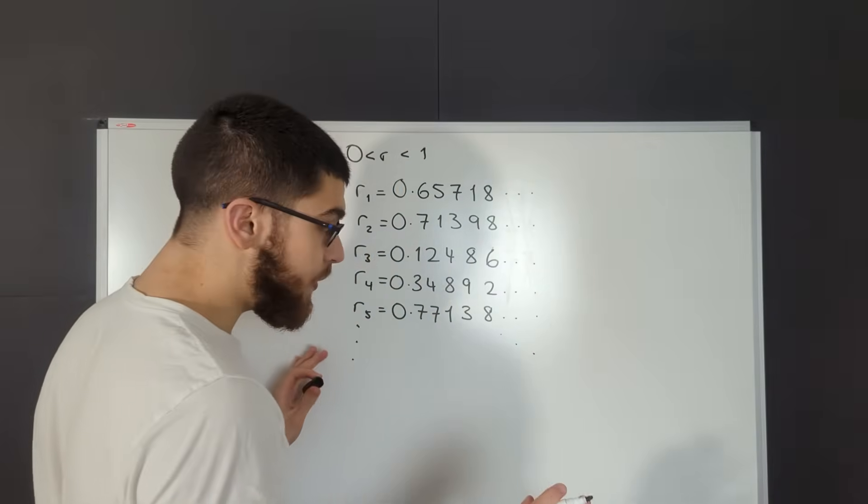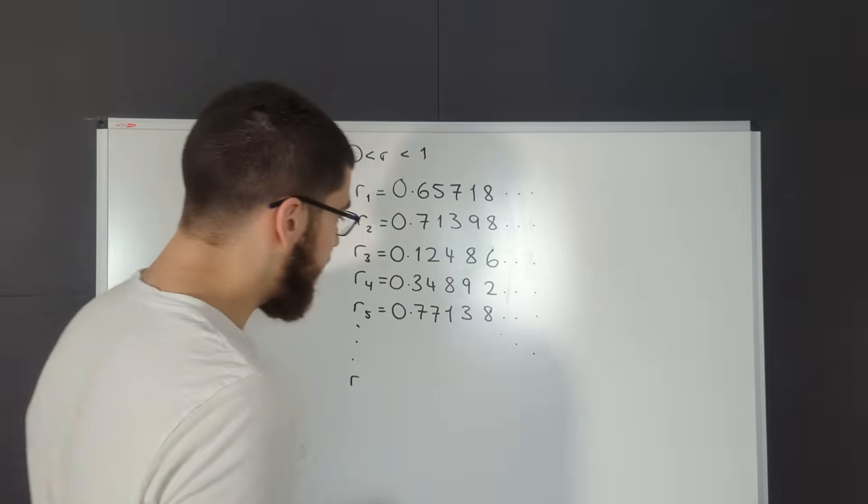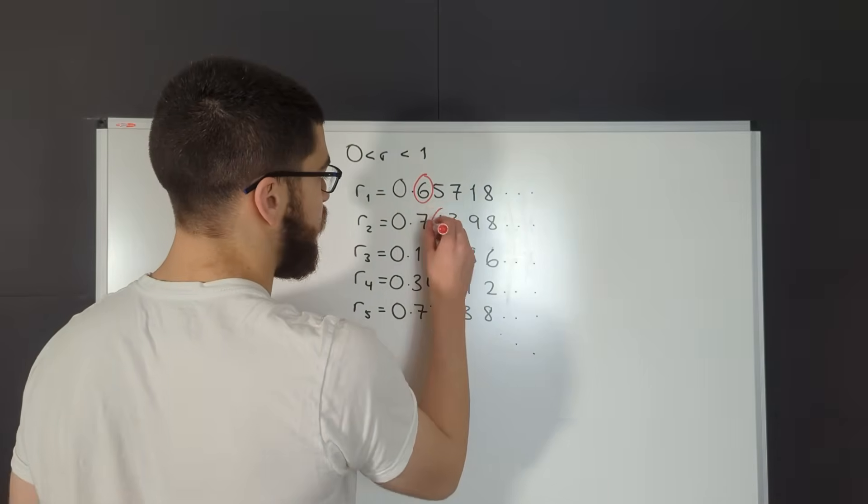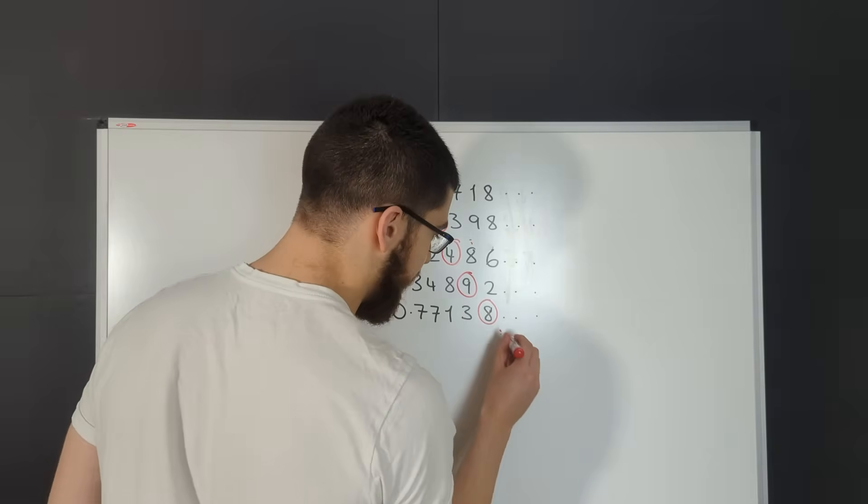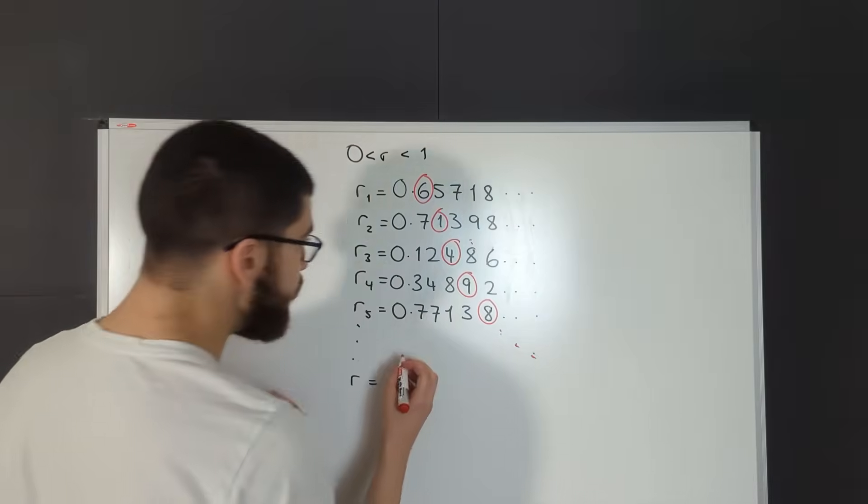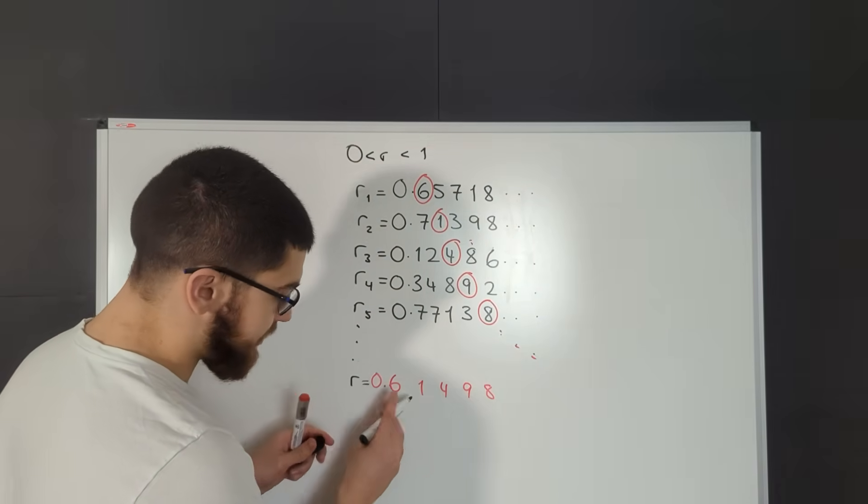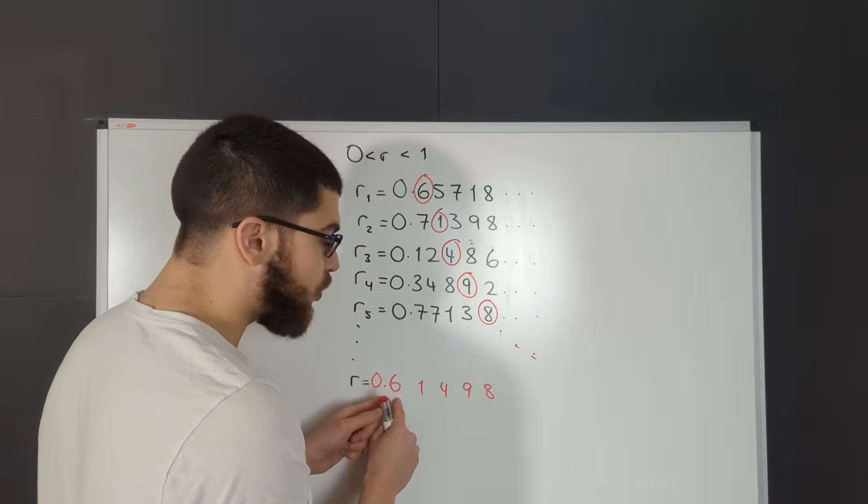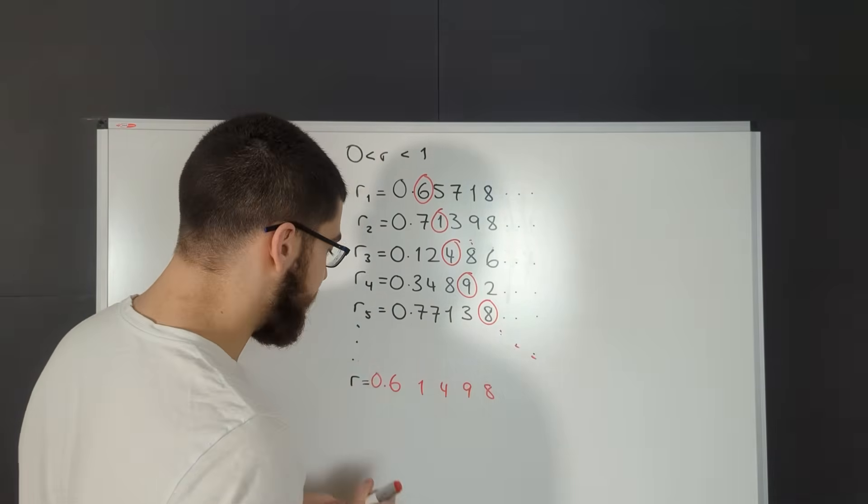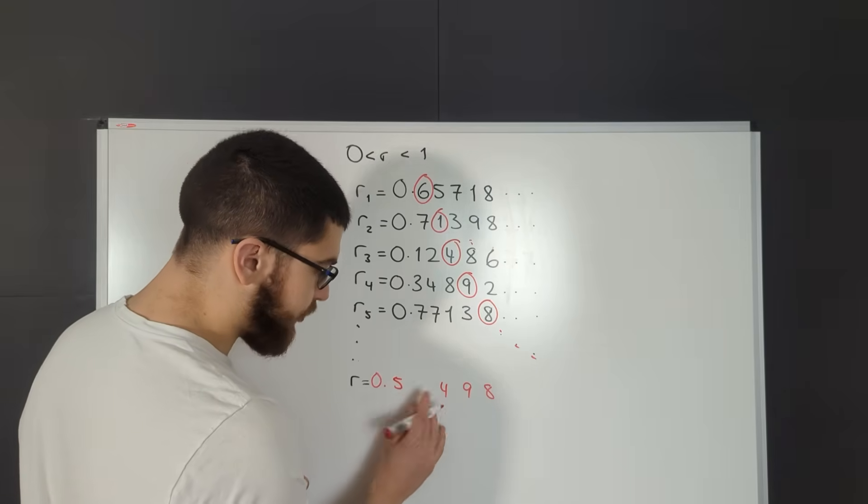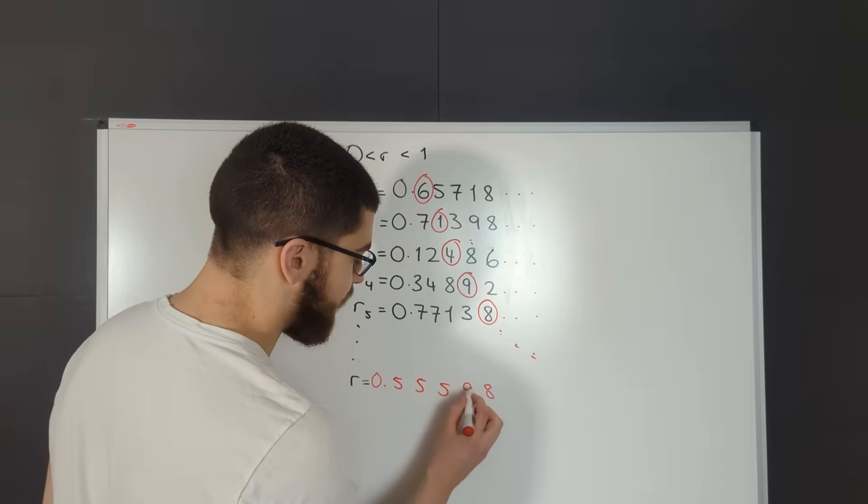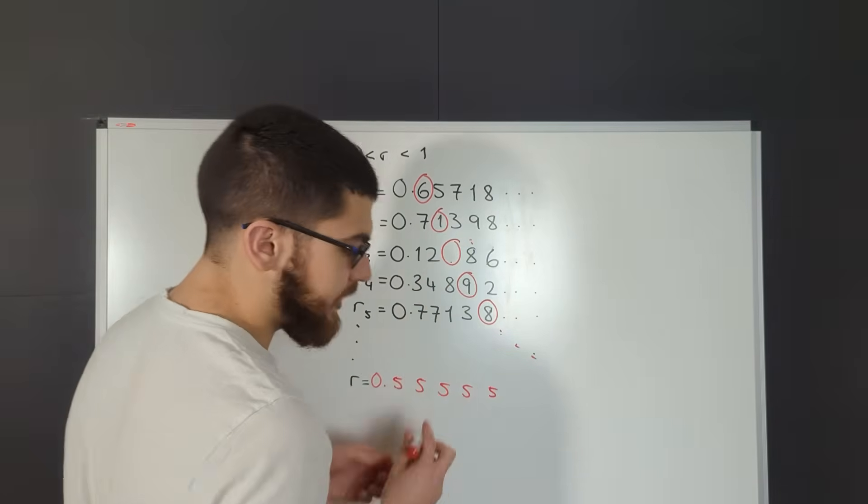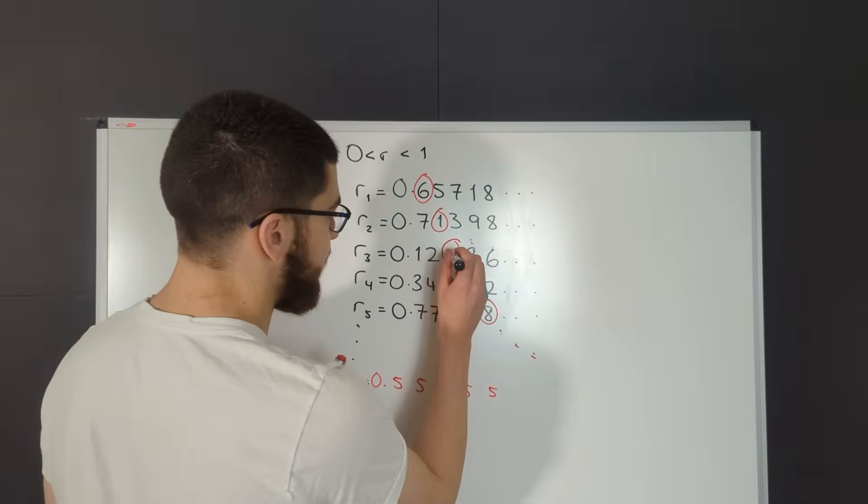Let's assume that is true, and then we construct another number which I'll call R. We'll do this by taking each of the diagonal digits—6, 1, 4, 9, 8, and so on down the list. I construct this new number, and then if this digit is equal to five, we're going to change it to a six. If it's not equal to five, we're going to change it to five.